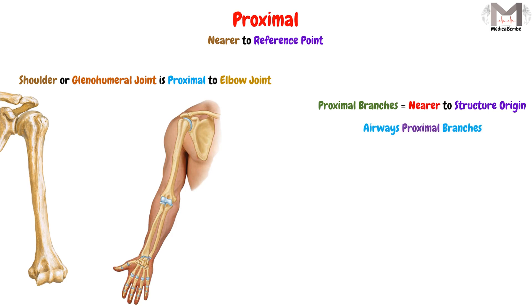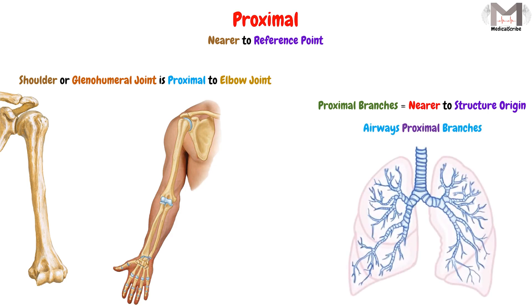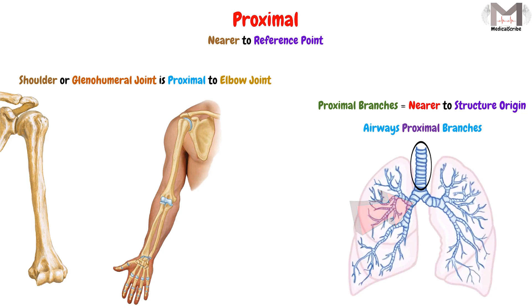In the second use, the proximal branch means the branch nearer to the structure's origin. So if we say the proximal branch of the airways, that means the airway branch that is closer to the airway origin. That is the meaning of proximal: nearer to the reference point.